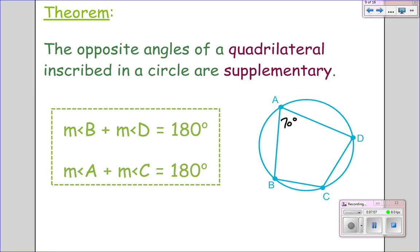So if I told you this was 70, you would know right away that angle C would be 110. What if this was right here 100 degrees? What would angle D be? Well, 180 minus 100 is 80 degrees.